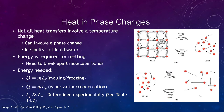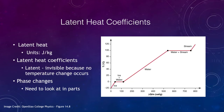Let's look at what we mean by latent heat and what its units are. Its units are joules per kilogram — so it tells you how much energy it takes to change the state of one kilogram of that substance.